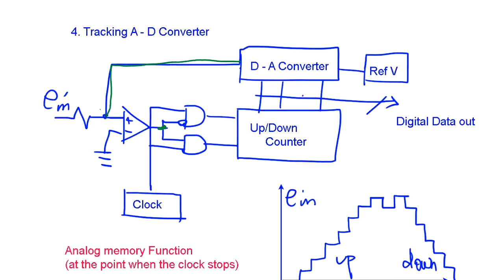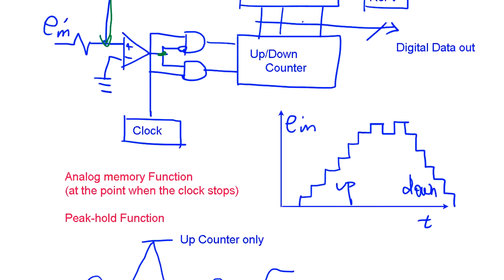So what happens is Ein comes in, and it's a step function. It keeps going up and coming down. And the great thing about this method is the analog memory function.